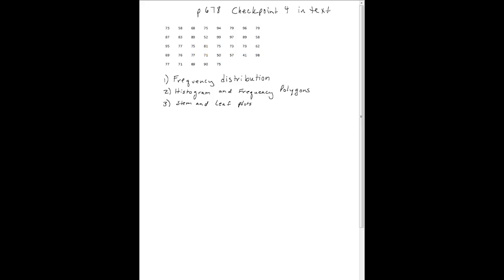The first thing we need to do for a frequency distribution is make our classes. We want to decide how to break up this data. We need to remember that we need to include the lowest data point and the highest data point, and make sure that our class width is the same for all of our classes.